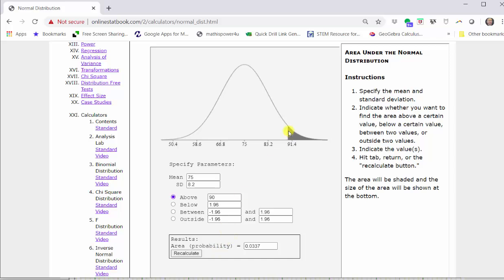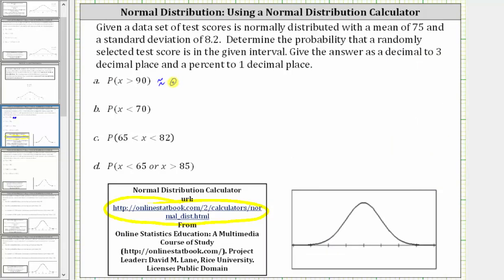Now looking at the graph above, notice how the area is shaded below the curve above the test score of 90. This area gives us the probability that a randomly selected test score is greater than 90. Looking below to three decimal places, we have approximately 0.034, which is equal to 3.4%.